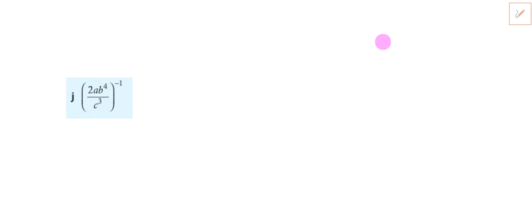So applying that here, look, we've only got a negative 1, which is nice. So the easiest way again is to just say the negative here will flip the fraction upside down, find the reciprocal of it. So nice and simple. So this becomes c cubed all over 2ab to the power of 4.